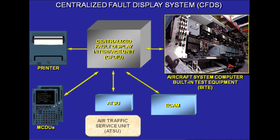Most aircraft system computers are equipped with built-in test equipment, BITE. The BITE permanently monitors the system operation. When a failure is detected, it is stored in the BITE memory and is transmitted to the CFDIU. The ECAM also monitors the aircraft systems, and the warning information is delivered to the CFDIU.